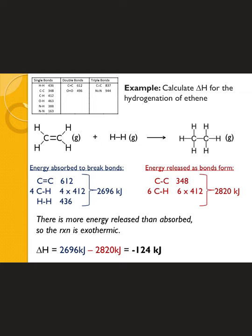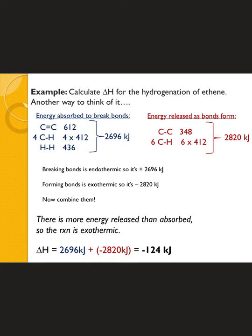I know the touch-screen handwriting isn't the best, so here is everything typed out so you can see the Lewis structures and the bond energies used to break and form in blue and red. You can see the subtraction method on this slide, and on the next slide bonds formed are treated as exothermic and added. Either way, the final answer is negative 124 kJ mol⁻¹.